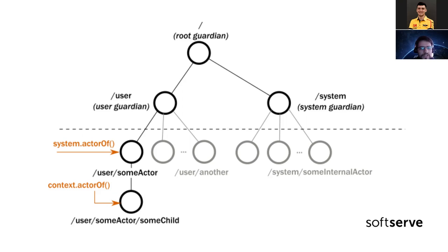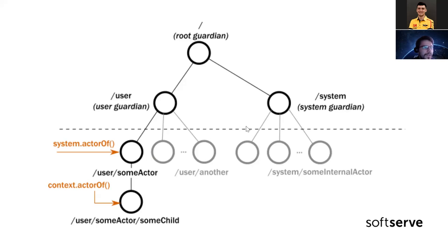When some child actors fall, it actually sends a message to the parent, and there we can configure the workflow for how we should handle it falling. The guardian is actually working to keep working with all the actors we have in our system.